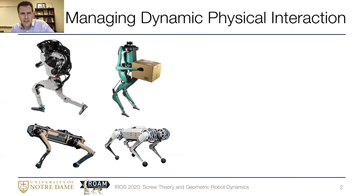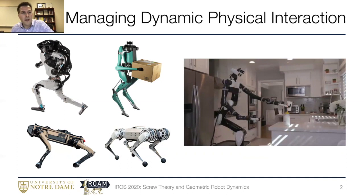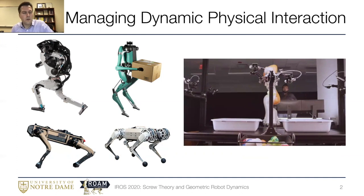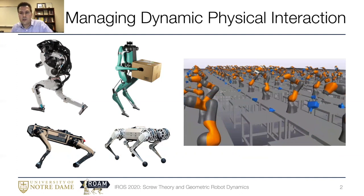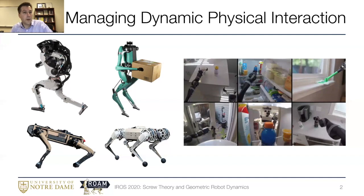I think this problem of managing contact transitions is more fundamental within our field. For instance, with robots that we might send into our home to assist us, these systems likewise are going to collide with the objects that they're needing to manipulate or with us in unexpected ways, and so this problem of managing dynamic physical interaction is much more fundamental even though we'll look at it in the context of legged robots today.